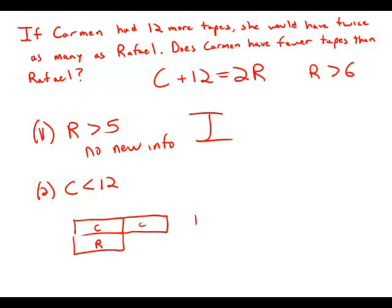If Carmen had more tapes than Raphael, then she would have to add less than the number that she already has to get up to twice of that value.